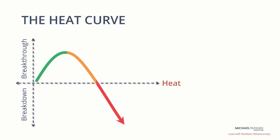One way to strike the right balance is by using the heat curve. Here is a graphic of the heat curve. The x-axis is heat increasing to the right. The y-axis is the ability for breakthroughs above or breakdowns below the horizontal line.